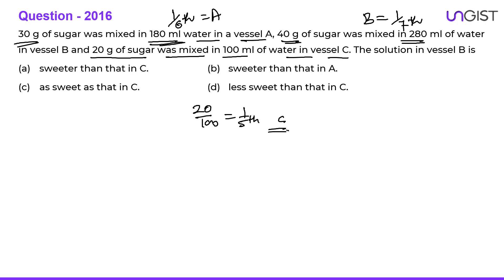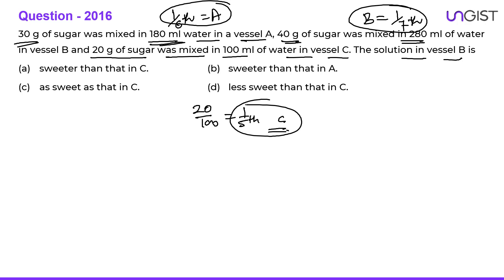In vessel A we have one sixth sugar, in vessel B we have one seventh sugar, and in vessel C we have one fifth sugar. So obviously in C we have the maximum sugar and in B we have the least sugar. The question asks about solution B: is it sweeter than C? No. Sweeter than A? No. As sweet as C? No. Less sweet than C? Yes — B is the least sweet solution, so it is less sweet than that in C.